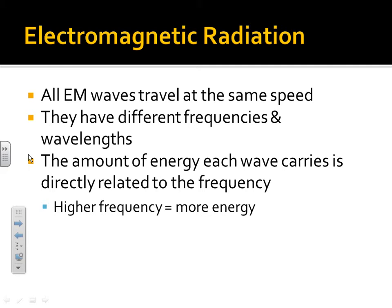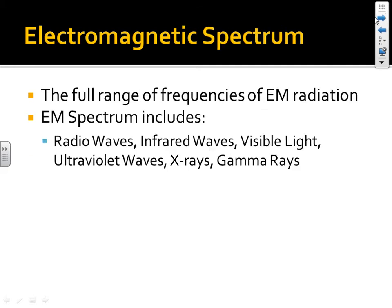That is a key difference between electromagnetic waves and mechanical waves. In mechanical waves, we look at amplitude to tell us how much energy the wave carries. But in electromagnetic waves, it's the frequency — and by relation, the wavelength. When we look at all the possibilities for electromagnetic waves and put them together, we get the electromagnetic spectrum: the full range of frequencies of electromagnetic radiation, classified by type based on frequency.